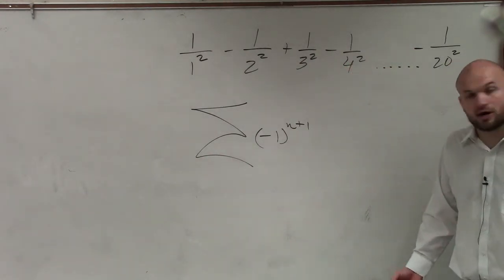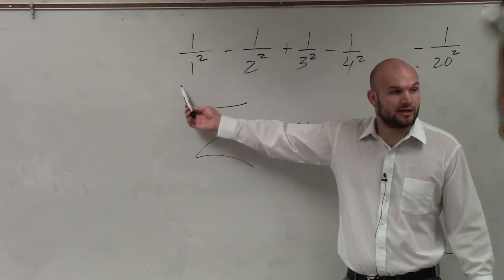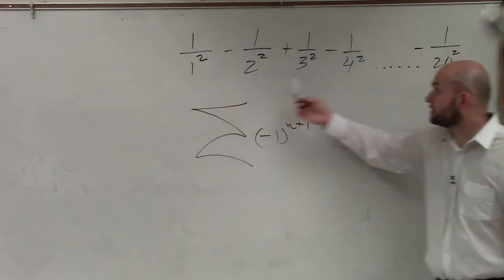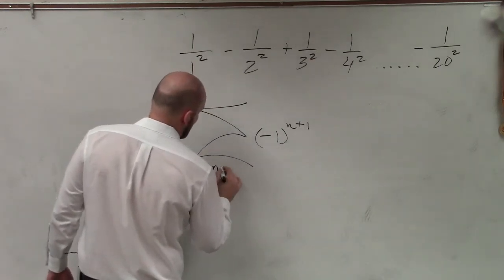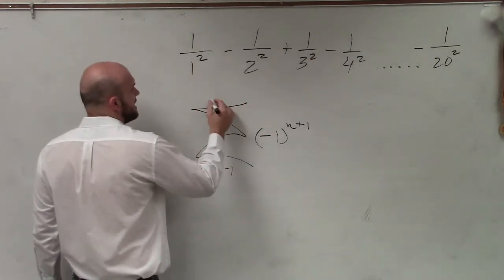Now, let's look at where we're starting and where our end is. It looks like we're starting at 1, and we're going to go all the way up to 20. So I'll say n equals 1, and we'll end at 20.